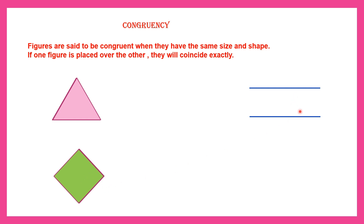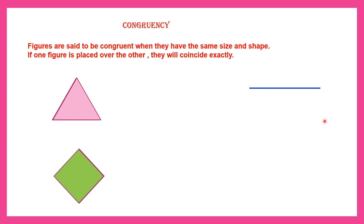Now here we have two lines. Let's see if these two lines, when they are placed one on top of the other, will coincide exactly. Yes, as you can see, they have also coincided. That means they are congruent lines. So this is the meaning of congruency — same size, same shape, and when placed over the other, they coincide exactly.